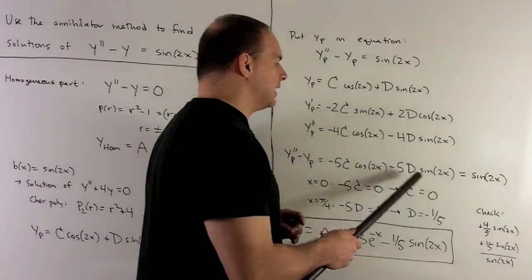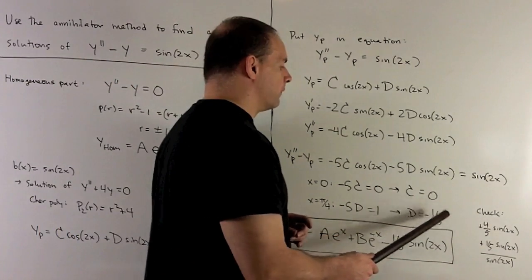Then, for the sines, I have minus 5d is equal to one. So, d is equal to minus one-fifth.